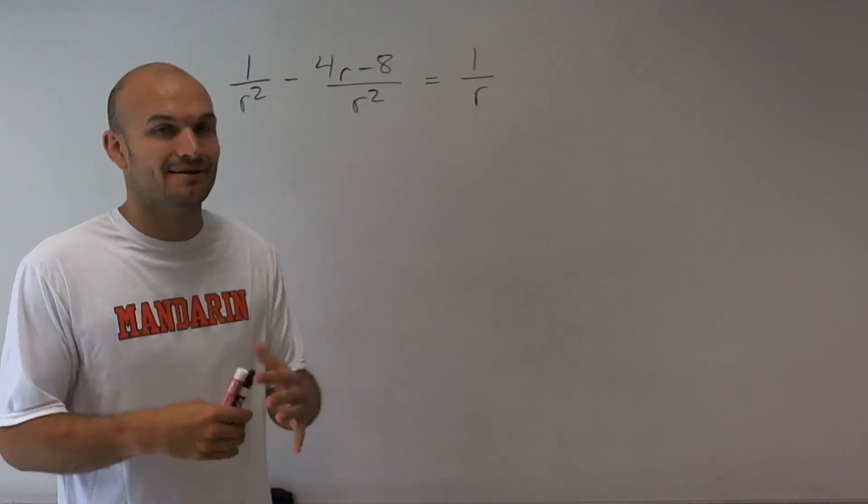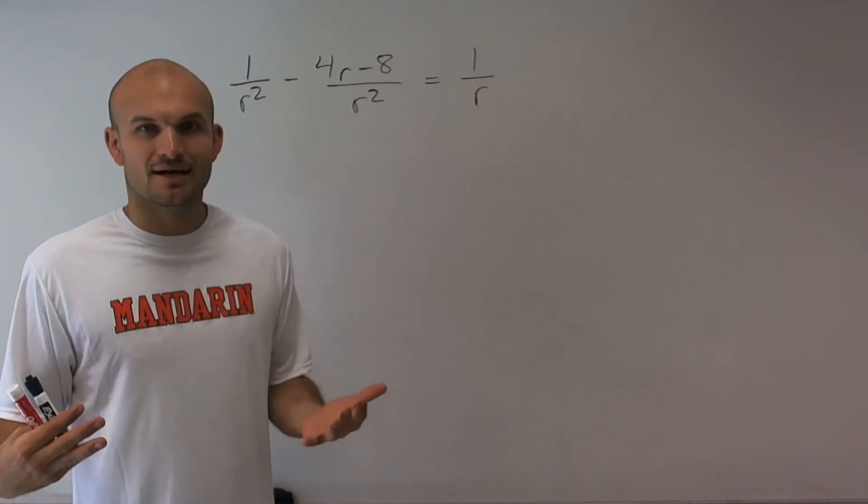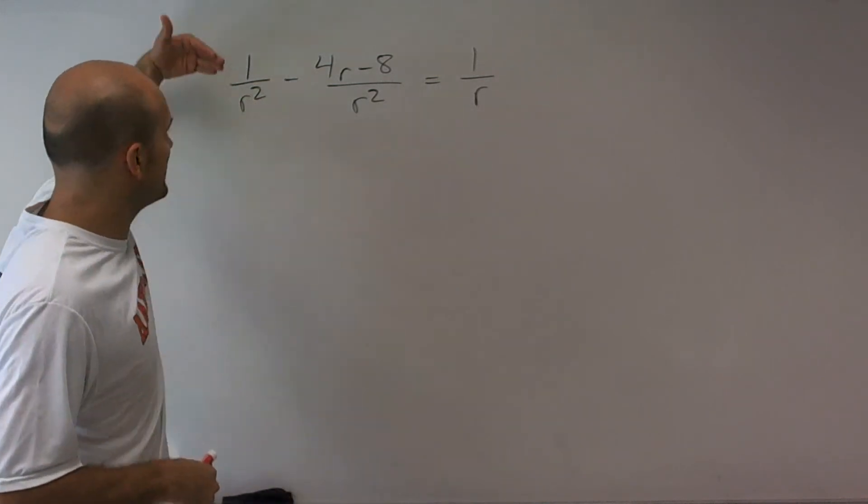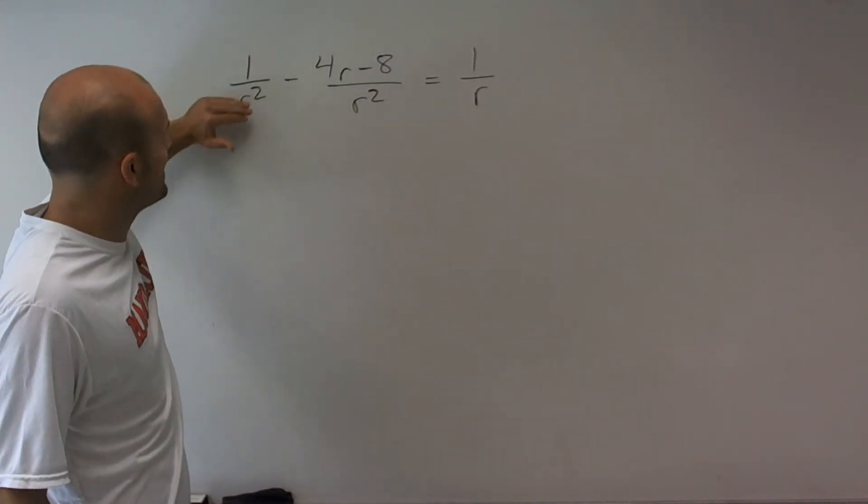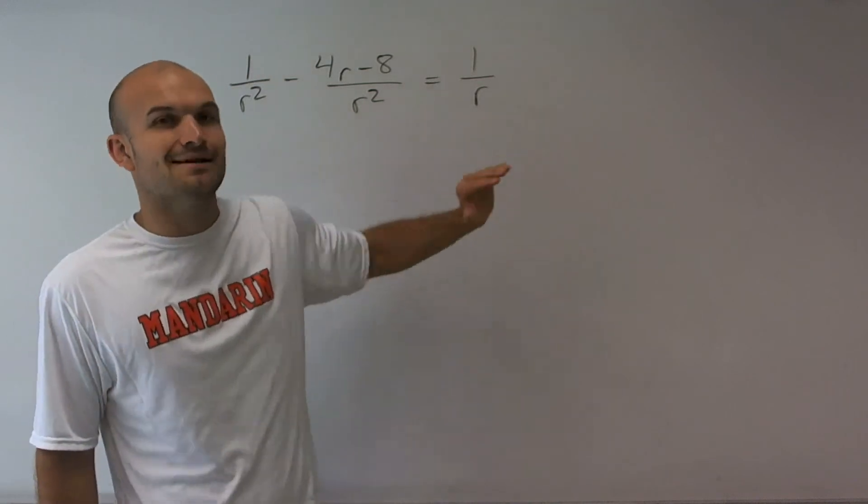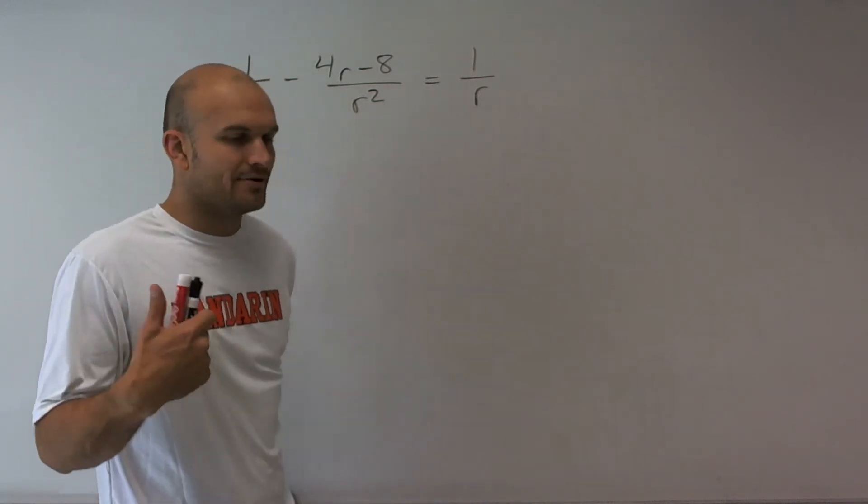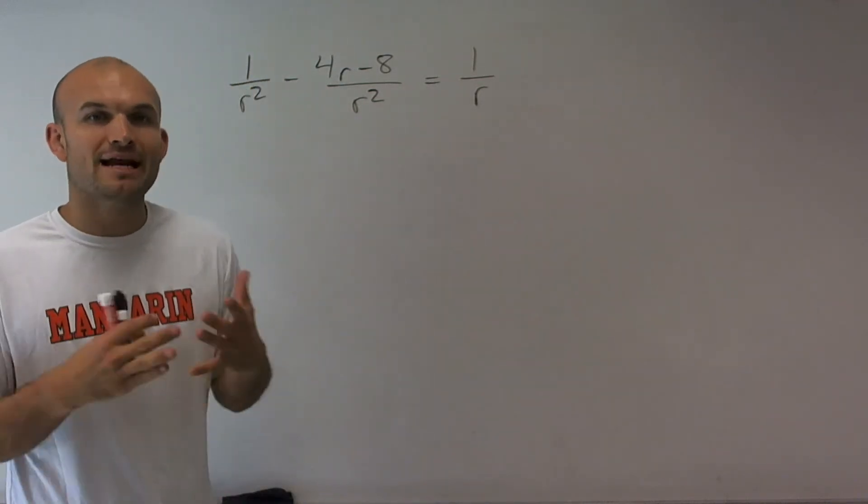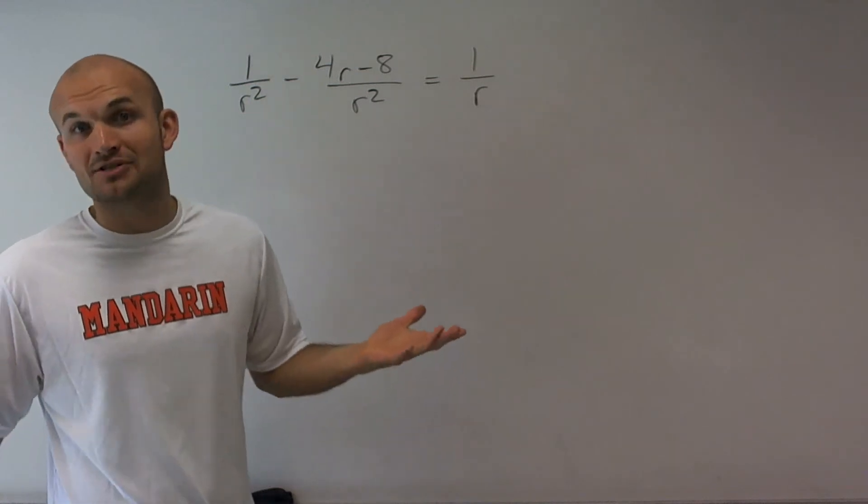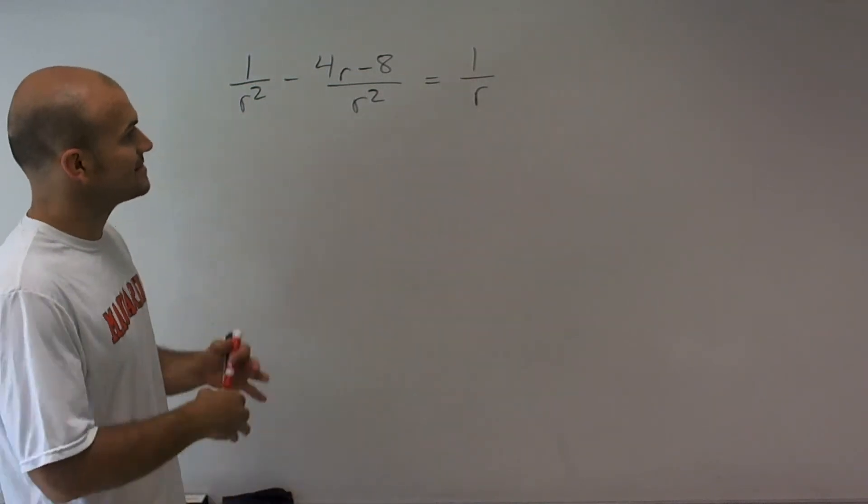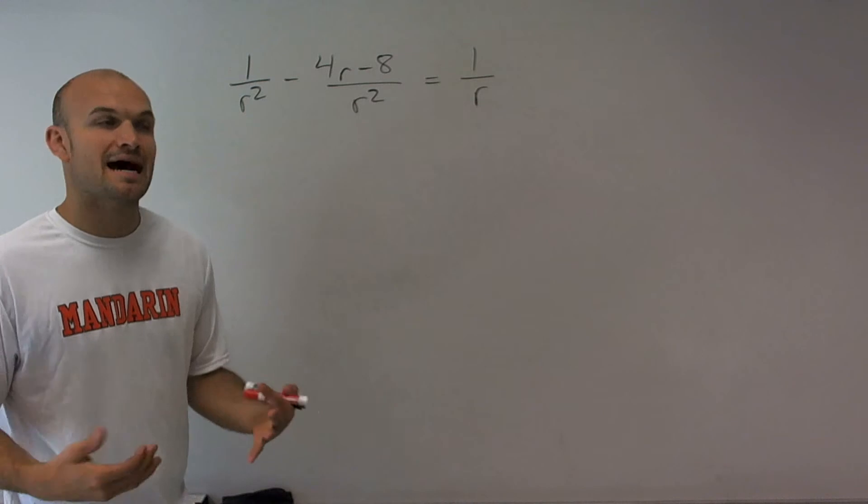It makes a lot of our problems more difficult than they have to be. So what I see here is I'm dividing by r squared and I'm dividing by r. Remember, to eliminate fractions, the fraction buster is to multiply by your common denominator.